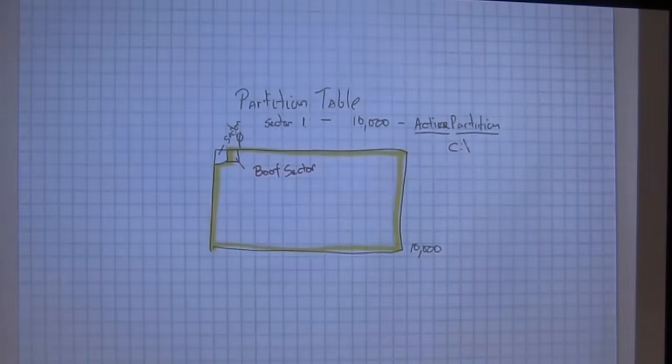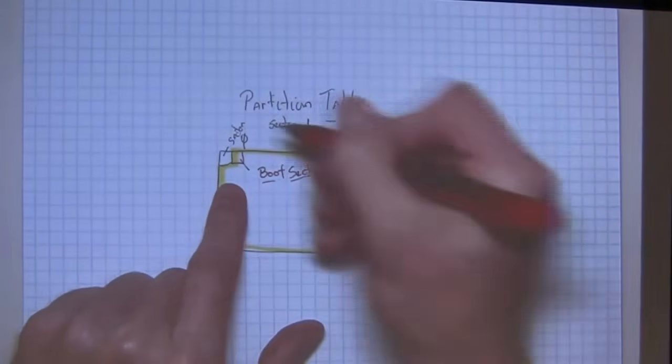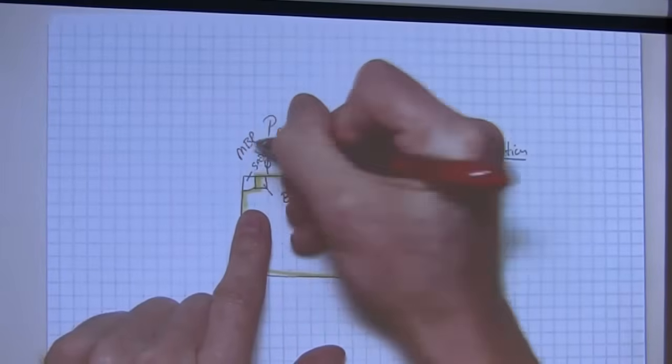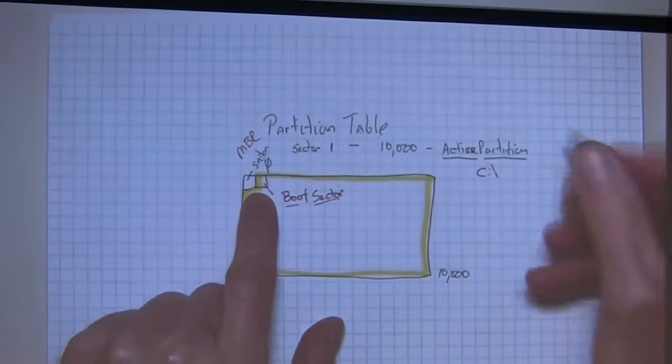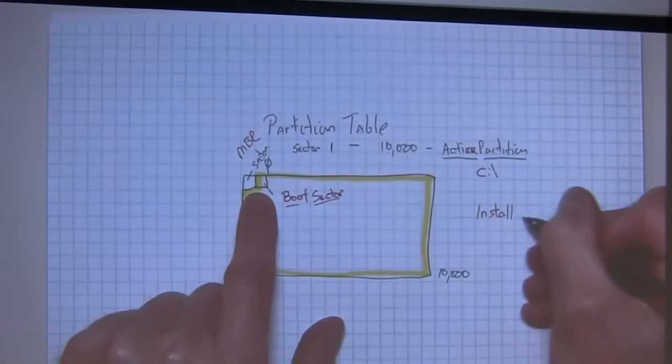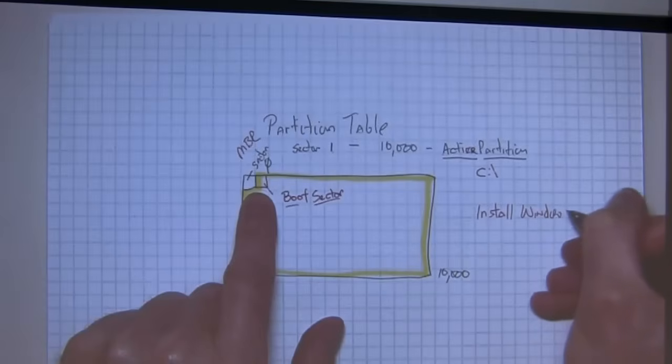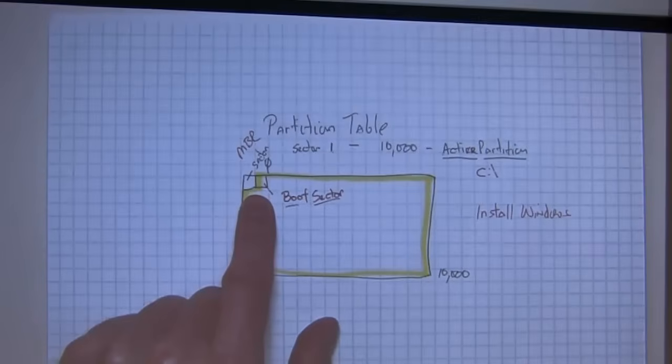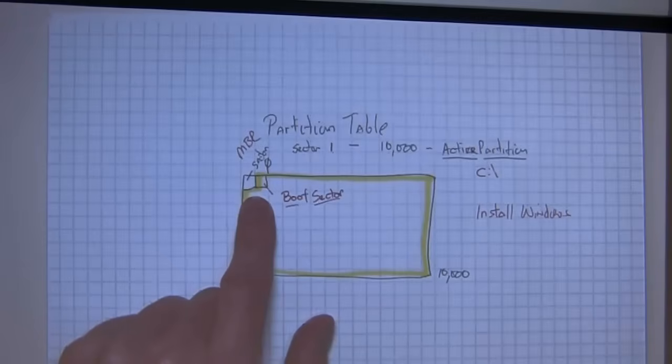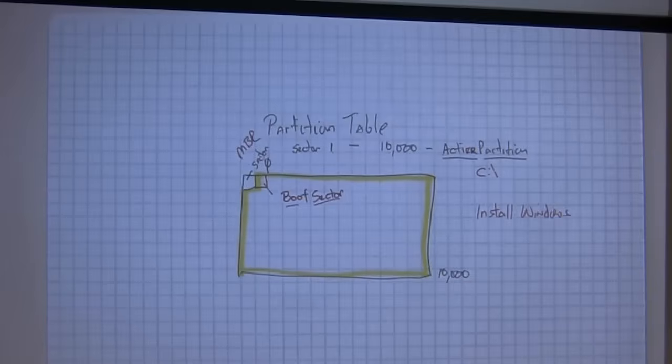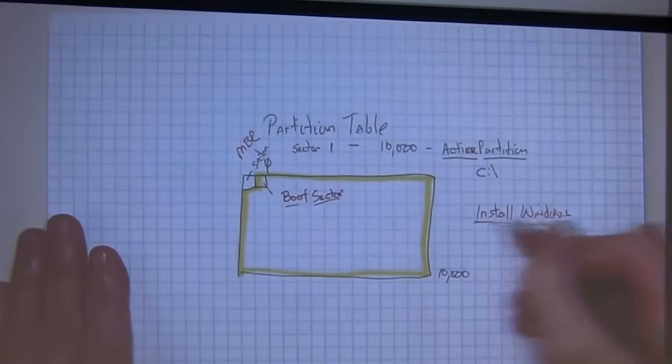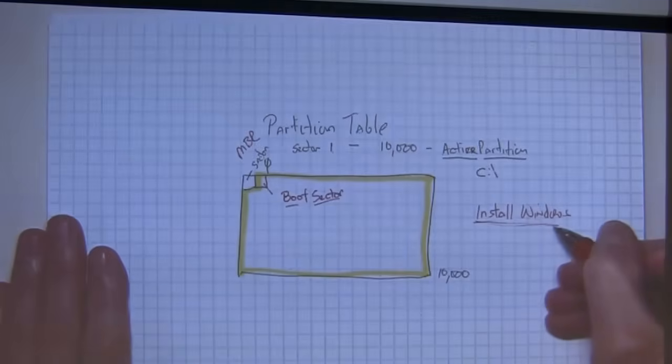The boot sector is basically the information to boot the operating system. Both the master boot record and the boot sector are created when you install Windows. That's the job of the installation program. Inside of the active partition, you could have other partitions. In this case, I'm Joe Blow at home, I just take all my hard drive and make it C drive.